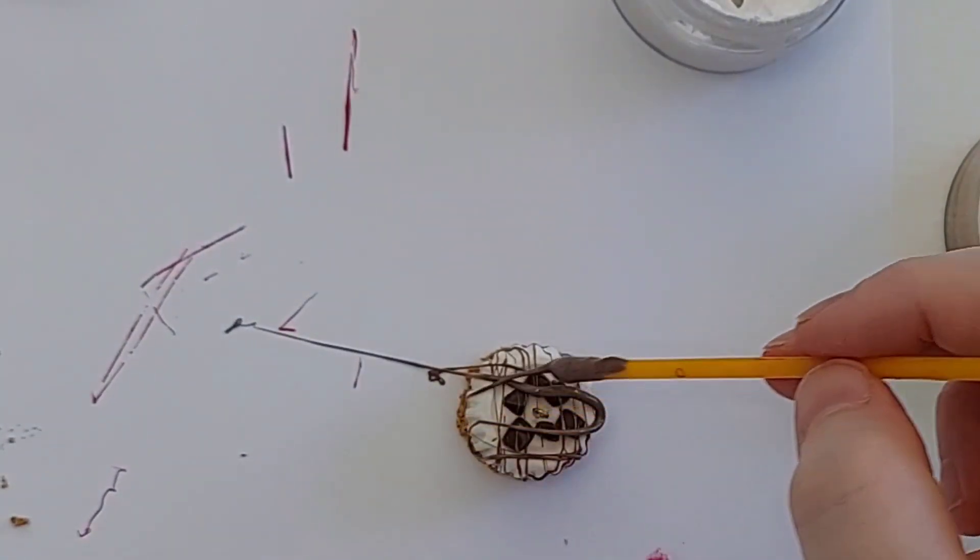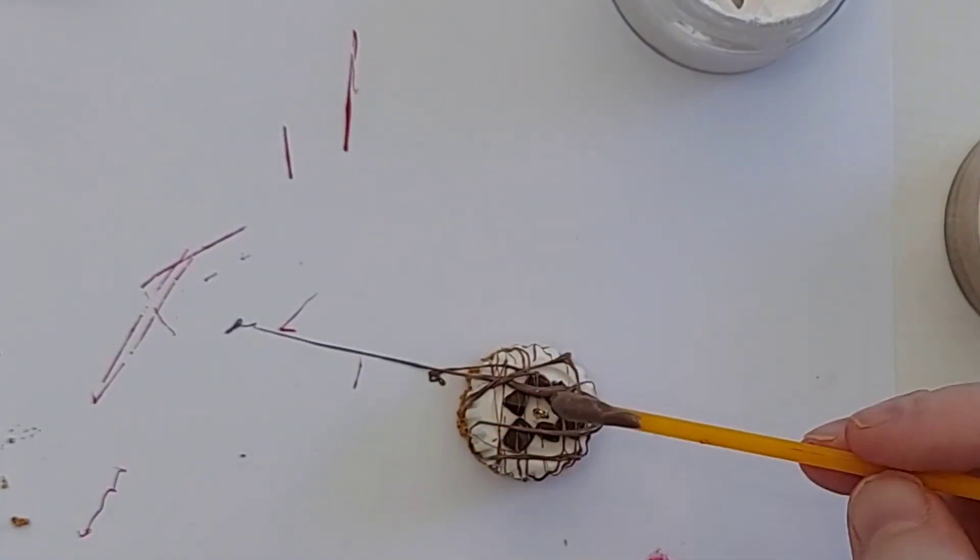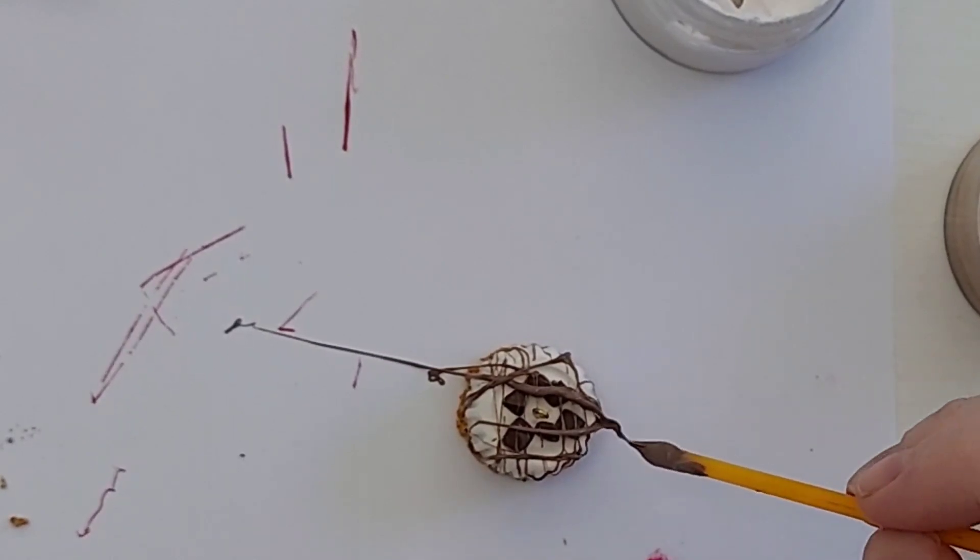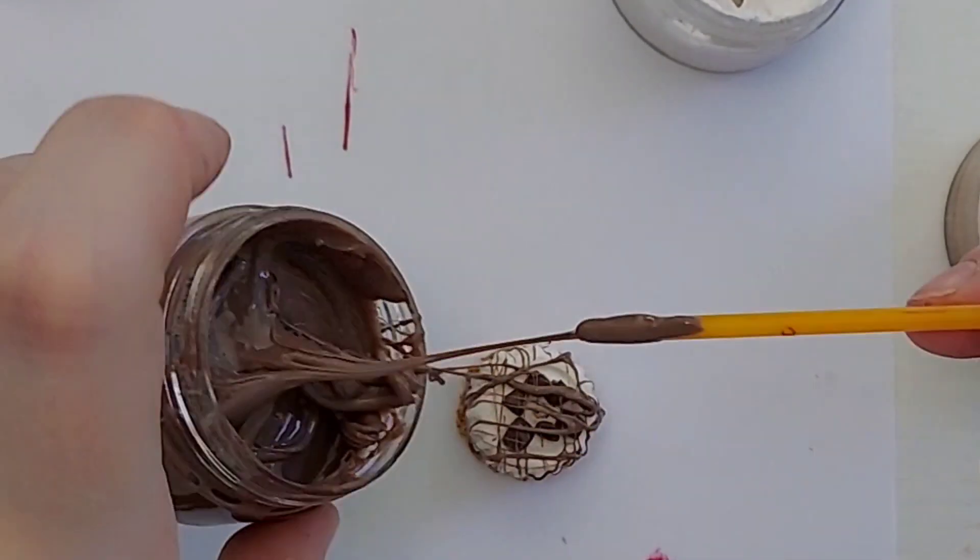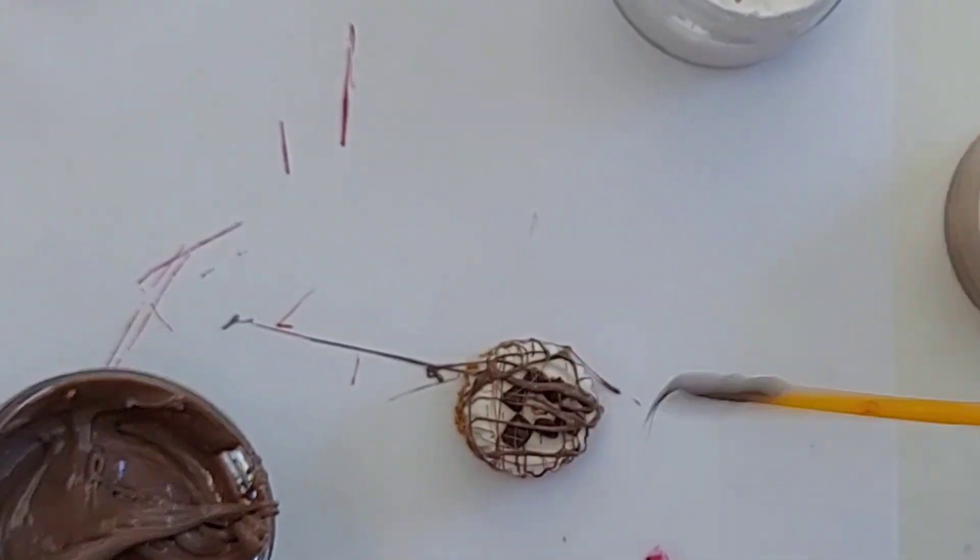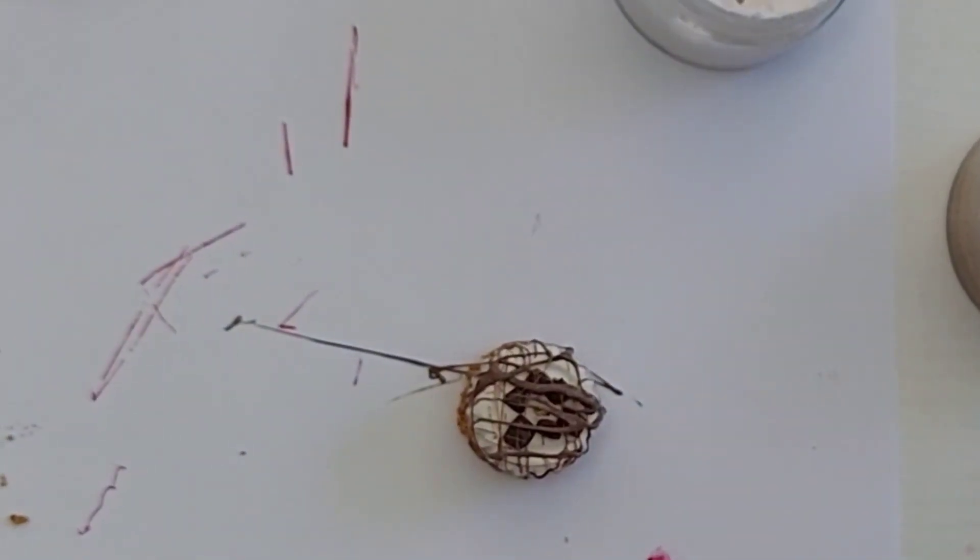I would say though, don't overdo it because if you overdo it, it doesn't look the greatest. So just go back and forth and side to side and you should get the desired effect that you want. And you can just take a toothpick and pick it up.